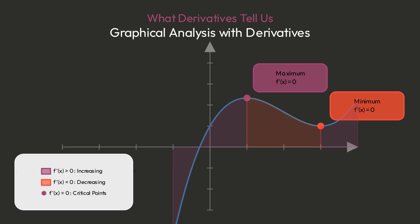This color coding shows the complete story: red regions where the derivative is positive and the function increases, orange where the derivative is negative and the function decreases.